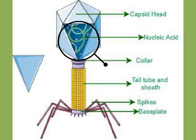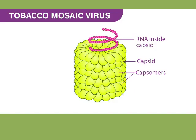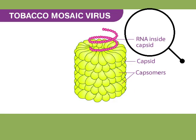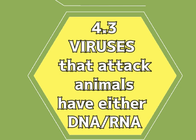Viruses that affect plants contain only RNA, while those that attack animals may either have DNA or RNA, but never both.